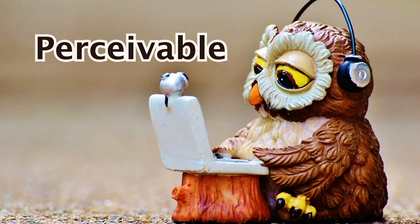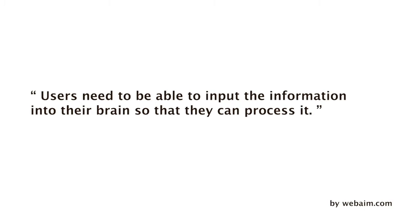P for Perceivable: the user should be able to identify contents or interface elements, whether through visuals, audio, or other senses. For example, you can't only use image instructions for tests or an application form. WebAIM.com says users need to be able to input the information into their brain so they can process it. As web designers, we need to make sure users with different disabilities can all perceive the information so they can use the website the way most of us do.